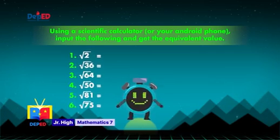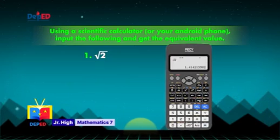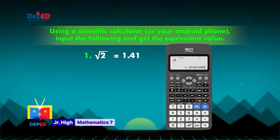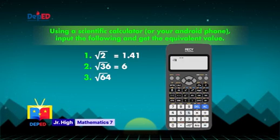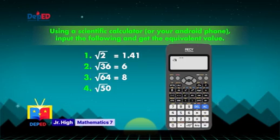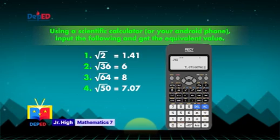Let's check. The square root of 2 — if we round it off to the nearest hundredths, that would be 1.41. The square root of 36 is 6. The square root of 64 is 8. The square root of 50 is 5 square root of 2 — if we round it off to the nearest hundredths, that would be 7.07.